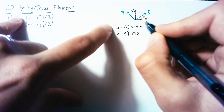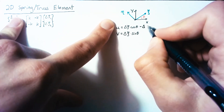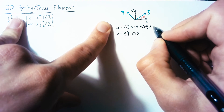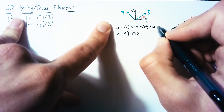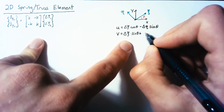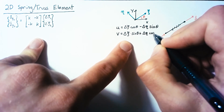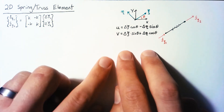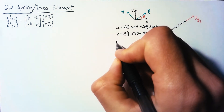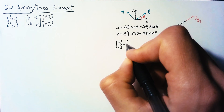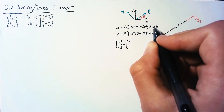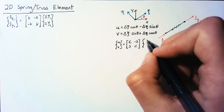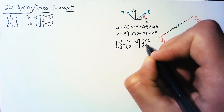To account for delta eta, we add its contributions. For u, a positive displacement in eta results in a negative displacement in x, so we get negative delta eta times sine theta. In the v direction, this is a positive delta eta times cosine theta. Writing these in matrix form, we get u, v equal to the matrix [c, -s; s, c] multiplied by our xi and eta displacements, where c is shorthand for cosine theta and s for sine theta.